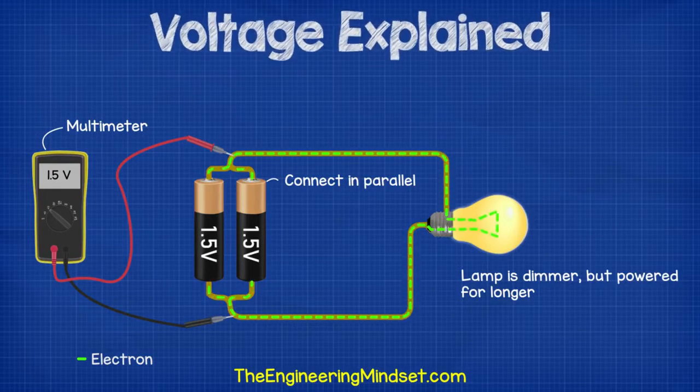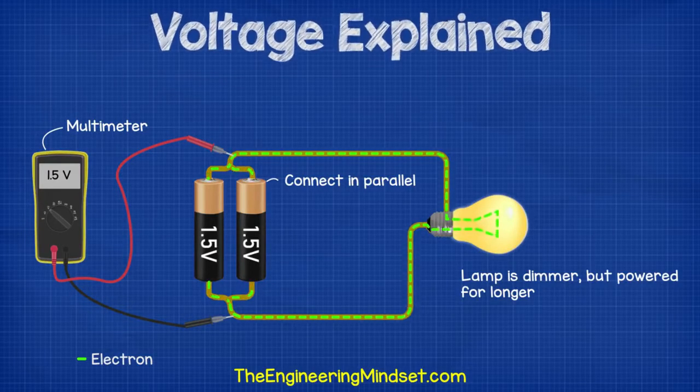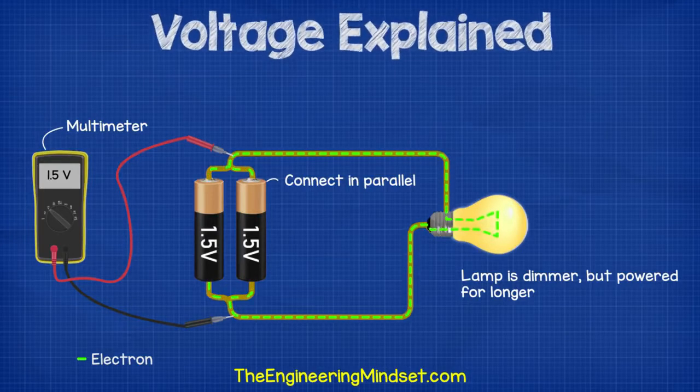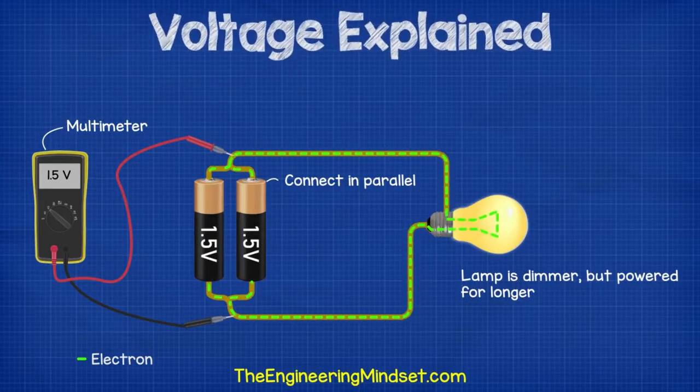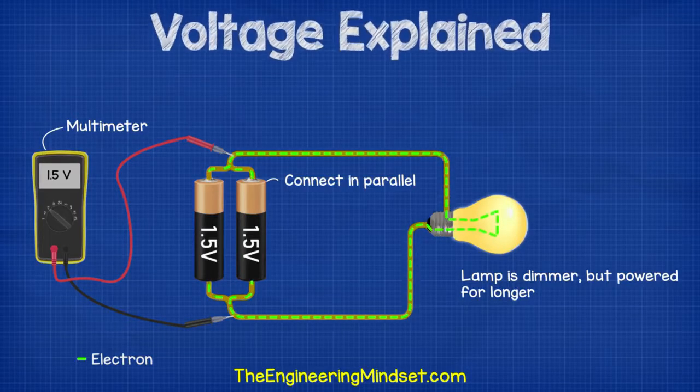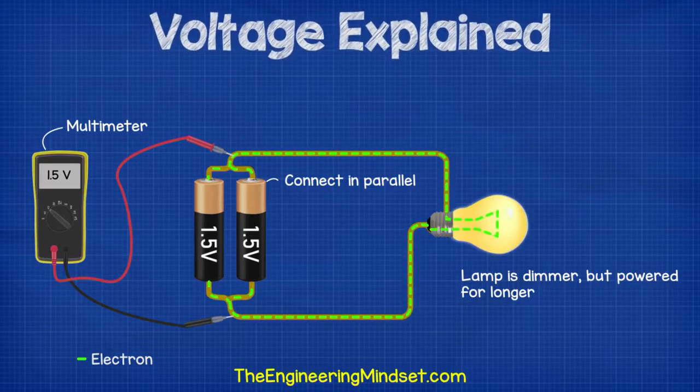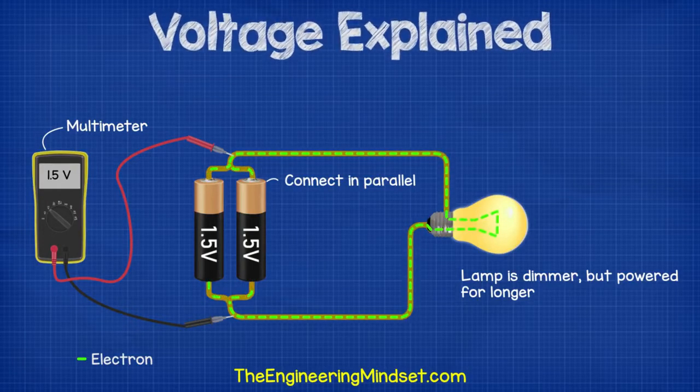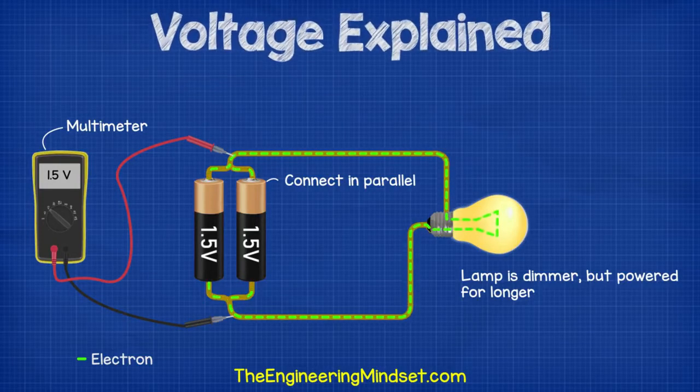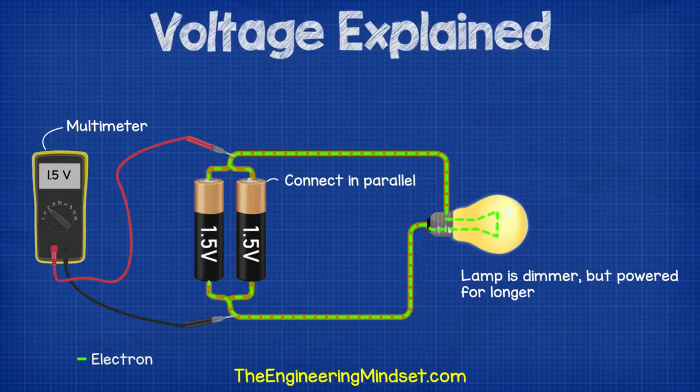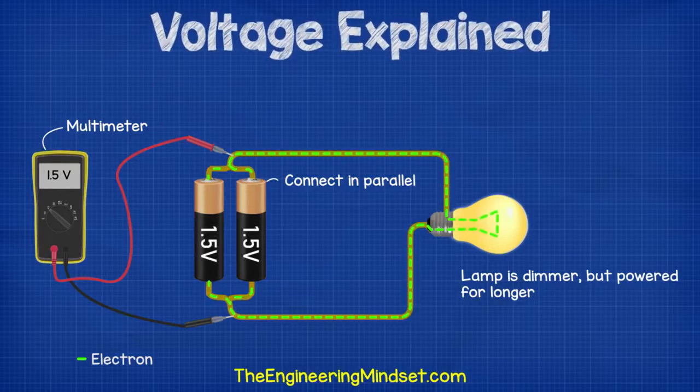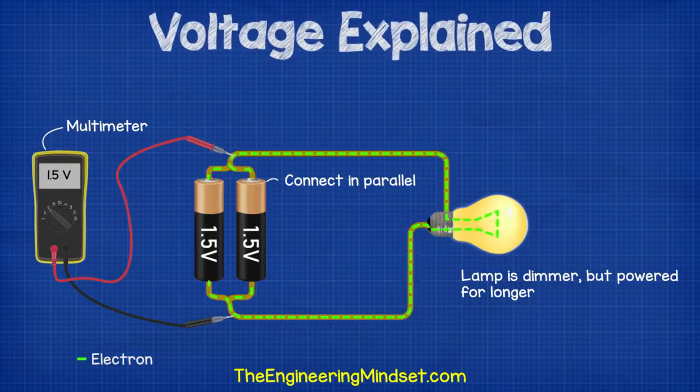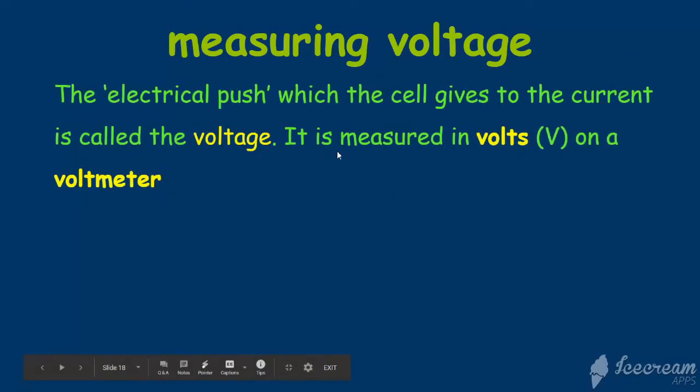However, if we were to move the battery and connect it in parallel, then the path of the electrons splits. Now we don't have more volts, but what we have is more amps instead. If we measure the voltage, we find that it is 1.5 volts. The lamp lights dimmer, but the circuit is going to last longer.